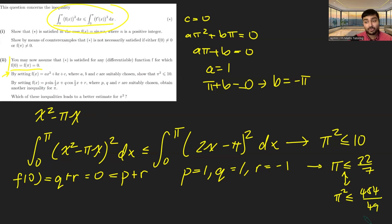But 484/49 is very clearly less than 10 because 484 is less than 490. And so this means that this second one must be a better bound because it gives us an even tighter upper bound for what π² can be.